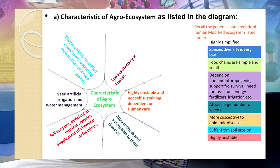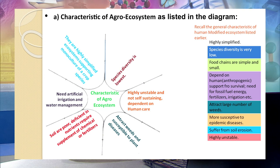The characteristics of agro ecosystems are: species diversity is lowest, as we grow either one or two crops only; they are highly unstable and not self-sustaining; they are dependent upon humans for survival and care; they attract weeds and are susceptible to plant diseases; soil becomes poor and deficient in nutrients, requiring supplements of chemicals or fertilizers. This is because we do not allow soil to recuperate from the previous cultivation before sowing the next crop, so larger and larger amounts of nutrients are withdrawn. There is also need for artificial irrigation and water management.